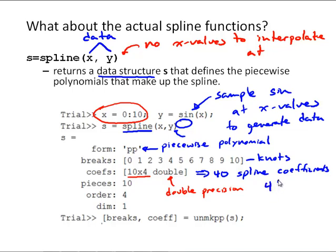Again, that's 4 times n minus 1, where n, in this case, is our 11 data points.